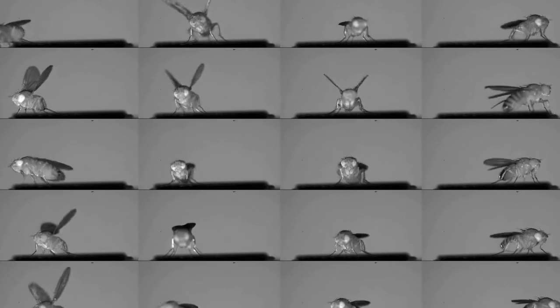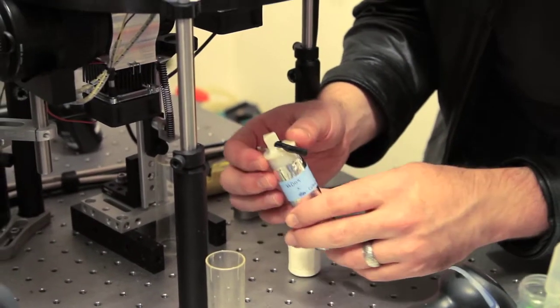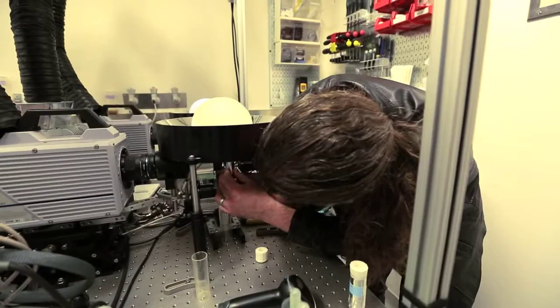We need to be able to look at a lot of flies performing this reaction. So we've built an automated machine, which we call the Fly Pez because it dispenses flies, similar to the old candy dispensers.